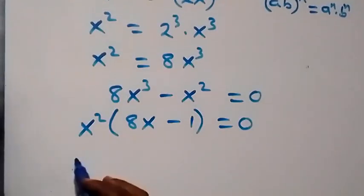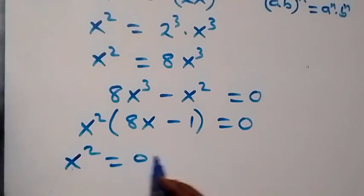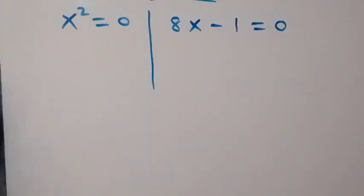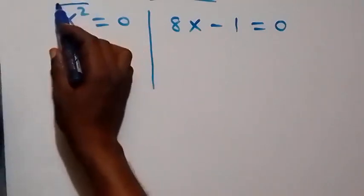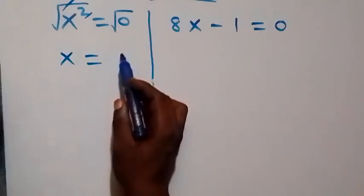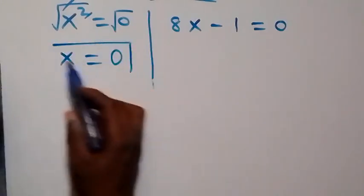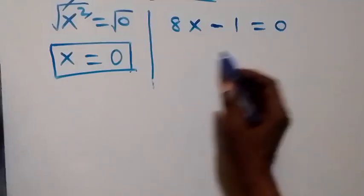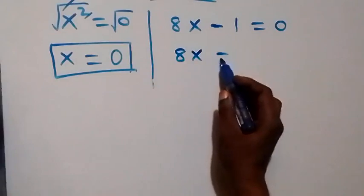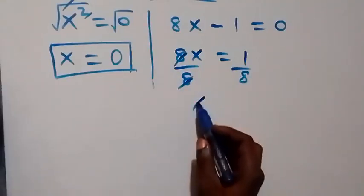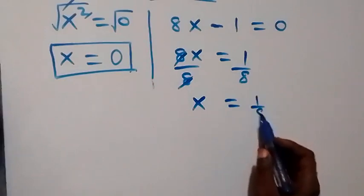So the two cases are: x squared equals 0, or 8x minus 1 equals 0. Taking the square root of both sides in the first case, x equals 0. For the second case, bringing minus 1 to the other side gives 8x equals 1. Dividing both sides by 8, we have x equals 1 over 8.